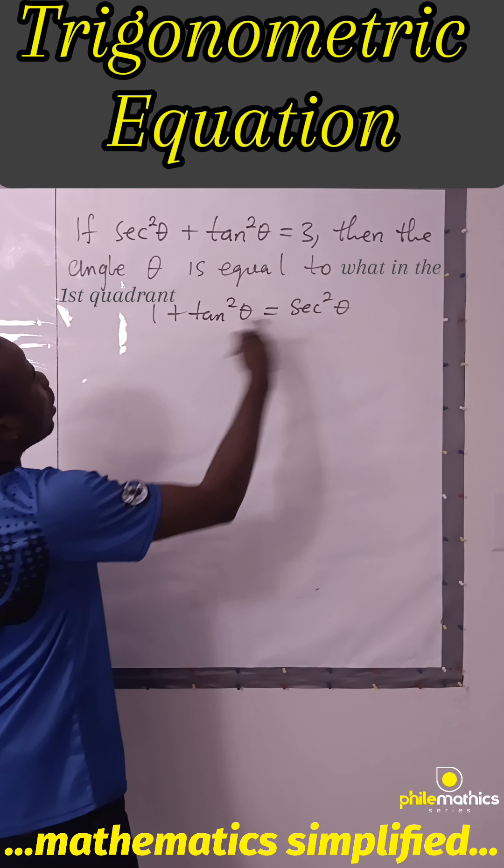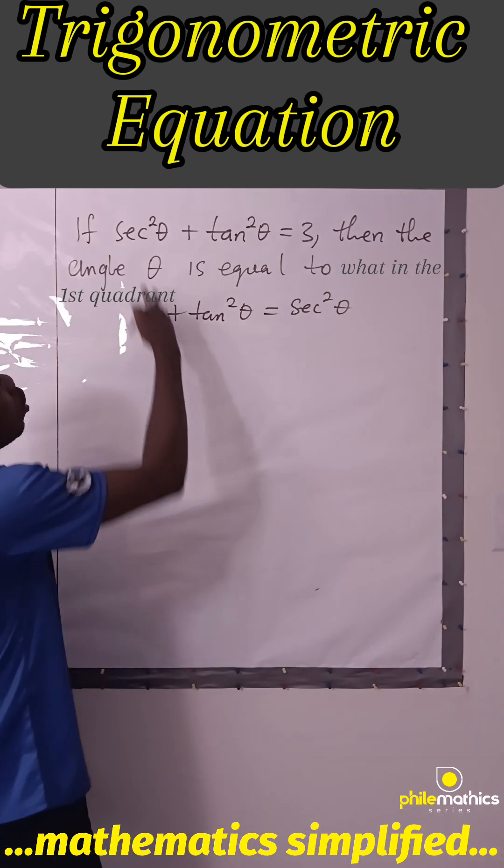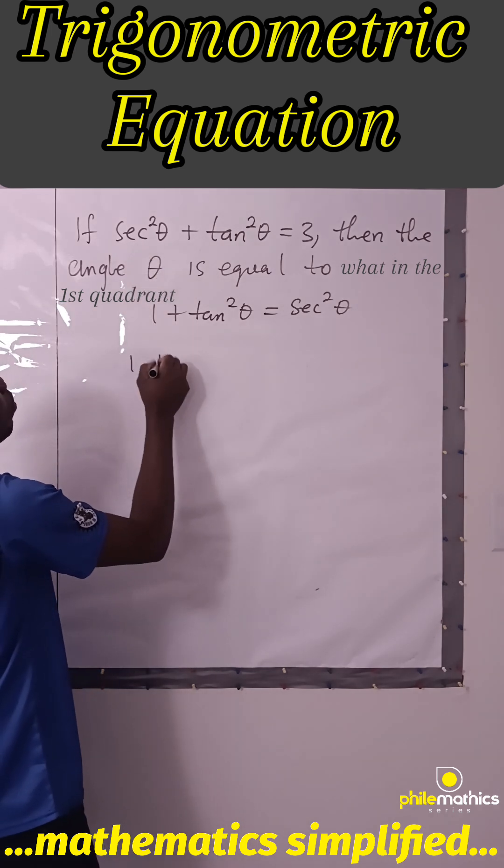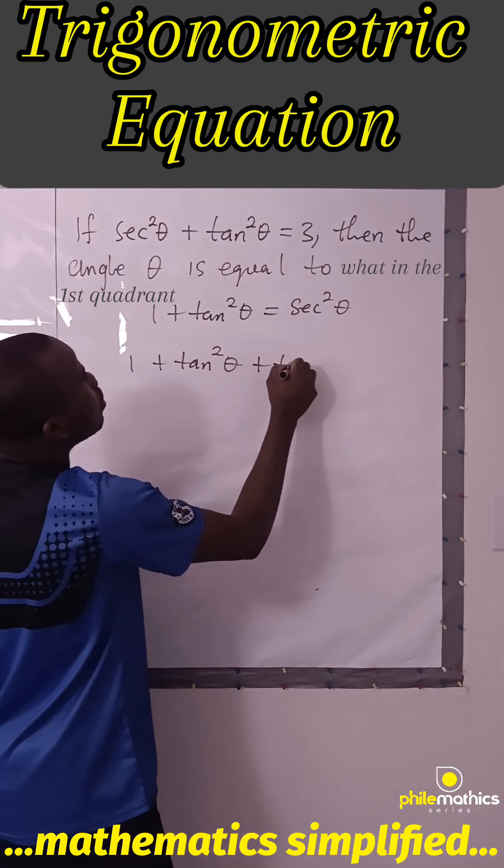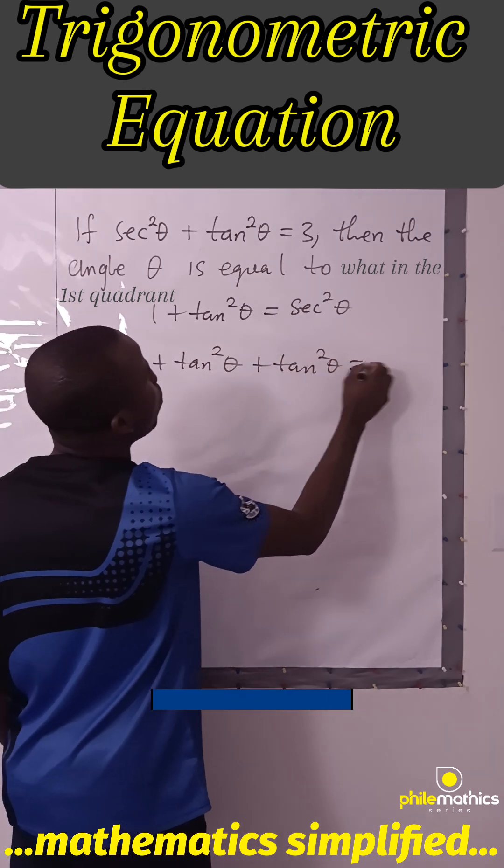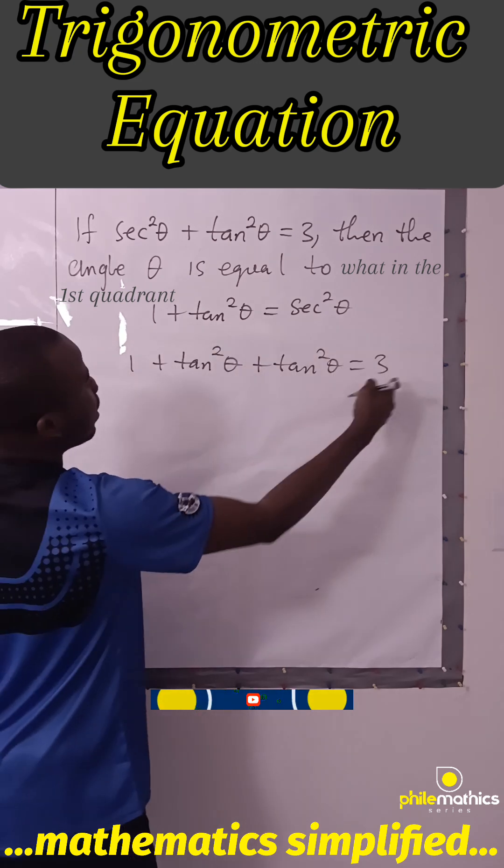In place of sec²θ, we can replace it with 1 + tan²θ. We'll do that here: 1 + tan²θ + tan²θ = 3. We take this to the right-hand side.